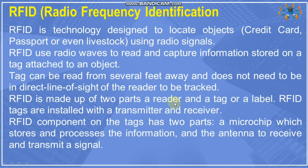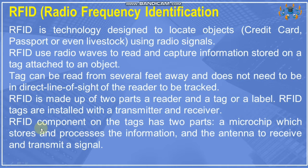RFID is made up of two parts: a reader and a tag or label. RFID tags are installed with a transmitter and a receiver. The RFID component on the tag has two parts: a microchip, which stores and processes information, and an antenna, which is used to receive and transmit a signal.